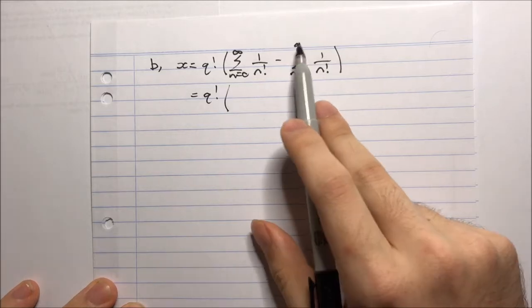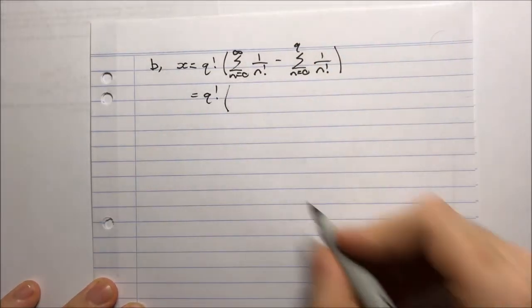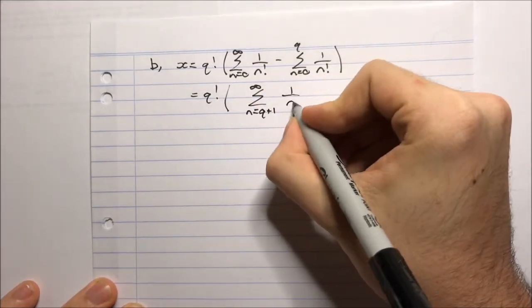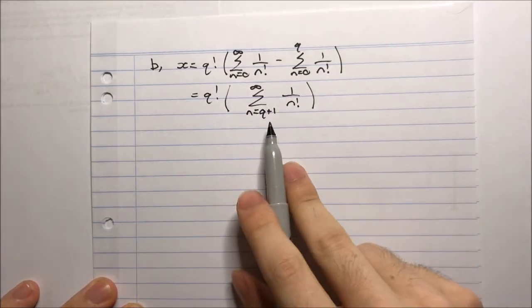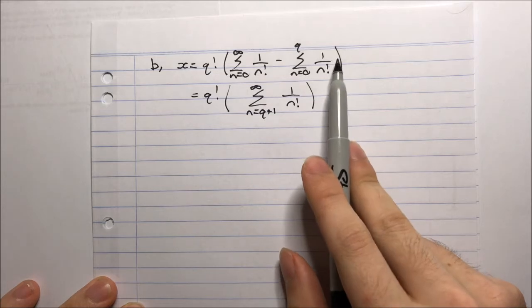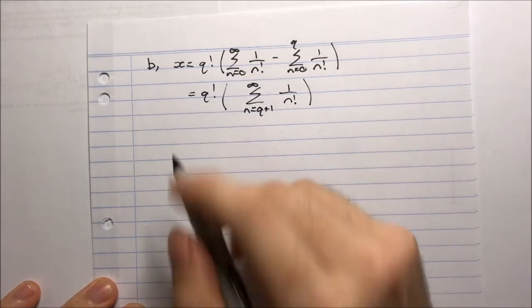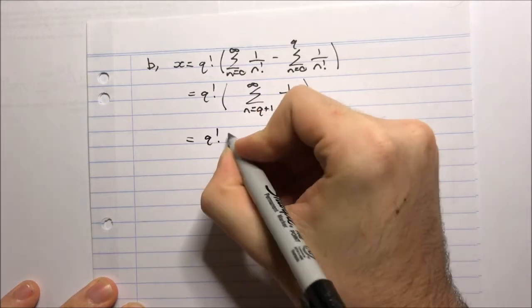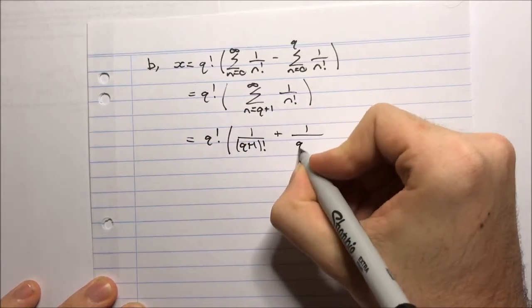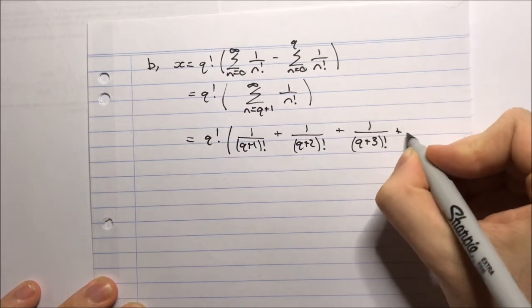When n is 0, 1, 2, all the way up to n equals q, those first q plus 1 terms cancel. So what remains in the bracket is the sum from n equals q plus 1 to infinity of 1 on n factorial. Therefore x equals q factorial times the sum from n equals q plus 1 to infinity of 1 on n factorial, which we can write as q factorial times 1 on q plus 1 factorial, plus 1 on q plus 2 factorial, plus 1 on q plus 3 factorial, and so on to infinity.